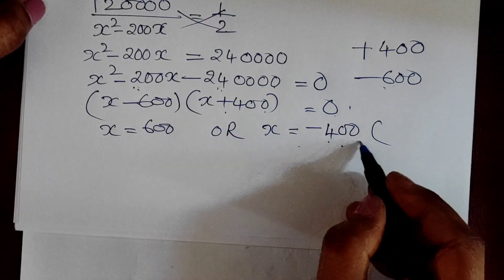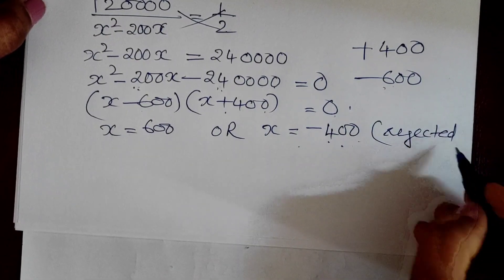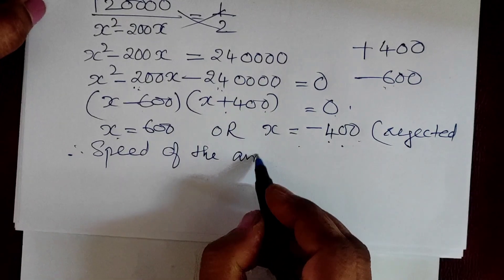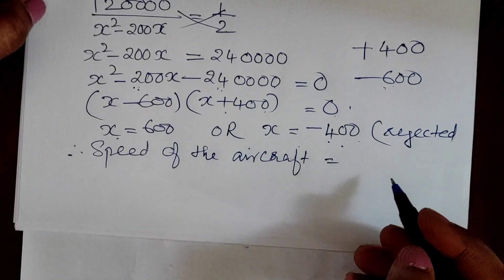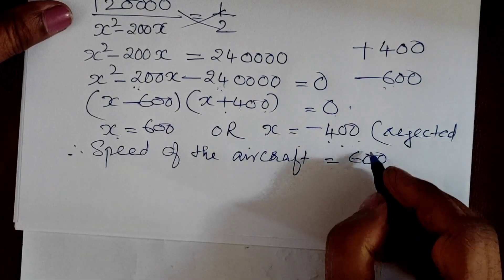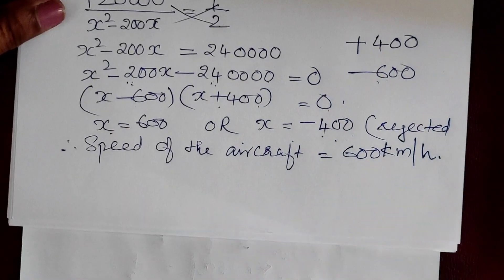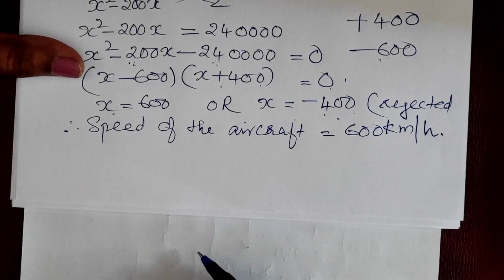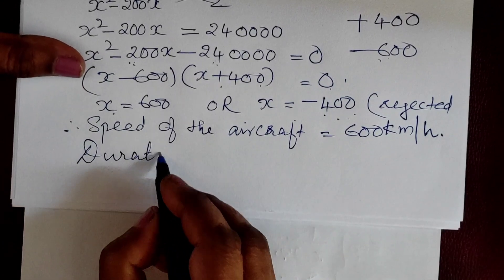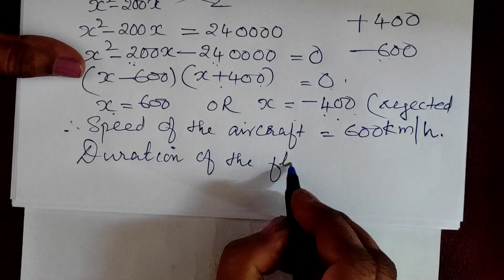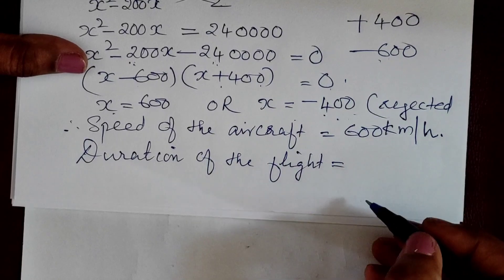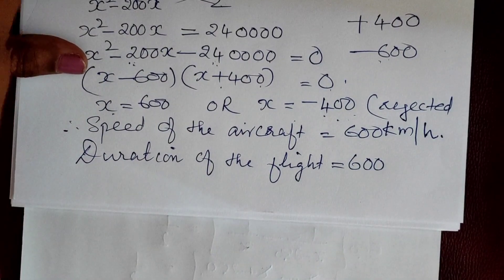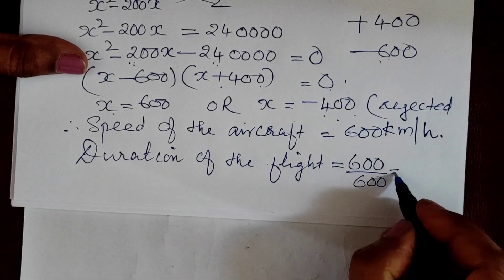So, x equals 600. The speed of the aircraft is 600 kilometres per hour. Now, the duration of the flight — time taken equals distance divided by speed, which is 600 divided by 600, that is 1 hour. The duration of the flight is 1 hour.